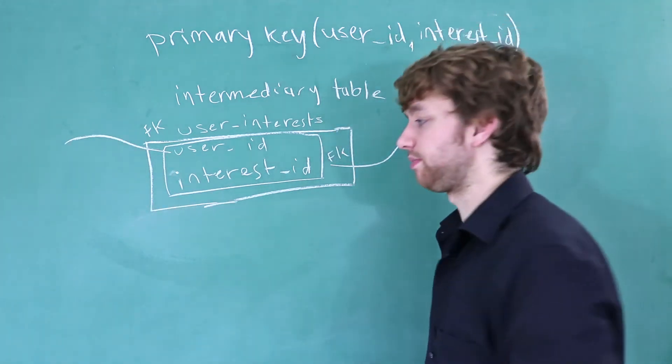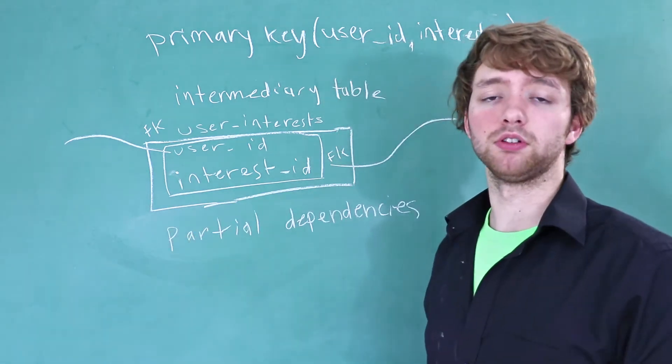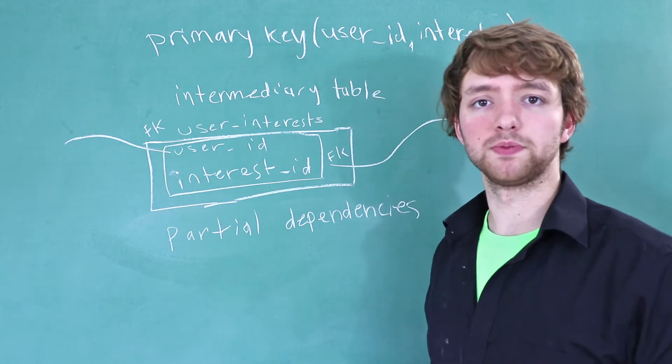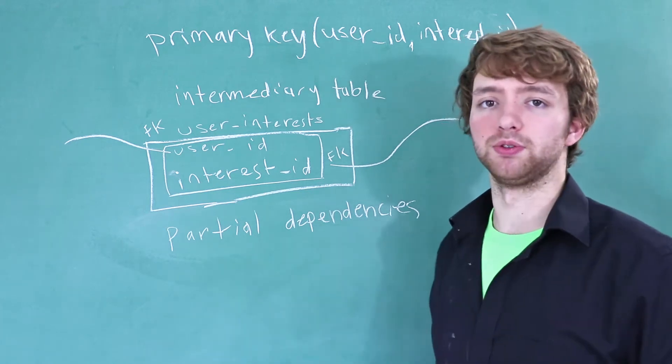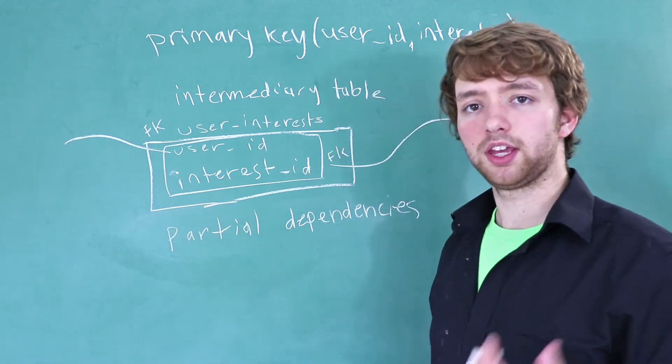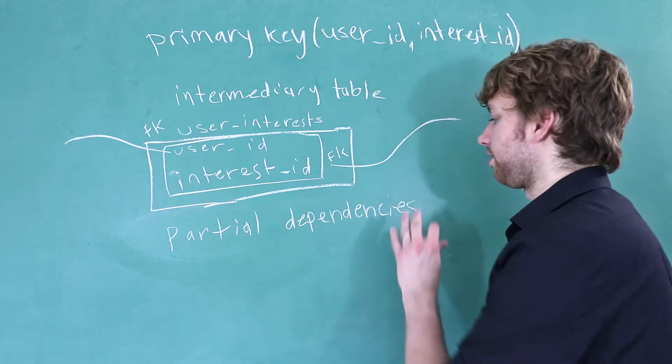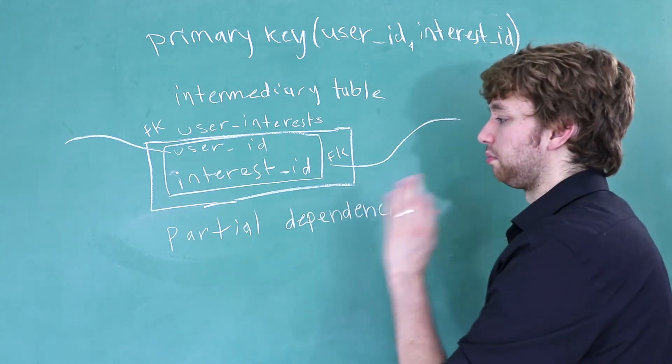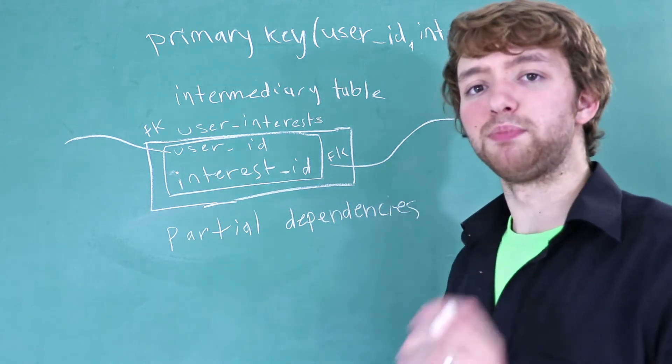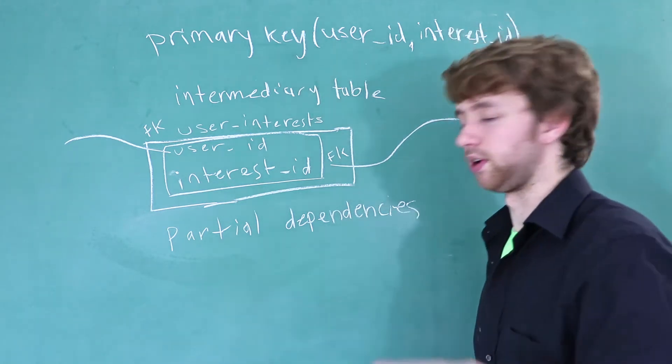Second normal form deals with something called partial dependencies. If you think back to the one-to-one relationships video and the other relationships videos, we talked about attributes depending on an entity. They describe an entity. Well, the same thing comes up here when we're talking about partial dependencies. We're talking about things describing the primary key, but only part of the primary key. So if that doesn't make any sense at all, that's okay. Essentially, imagine we have another column in here.